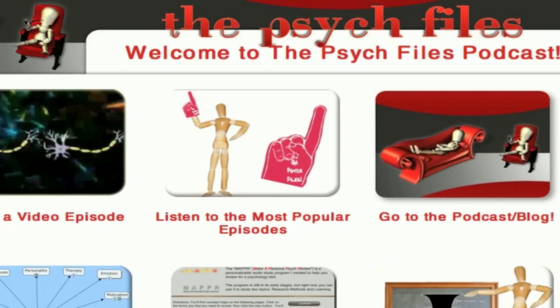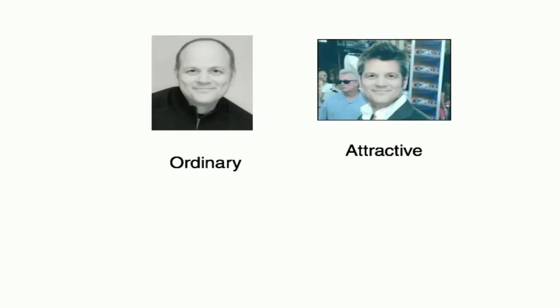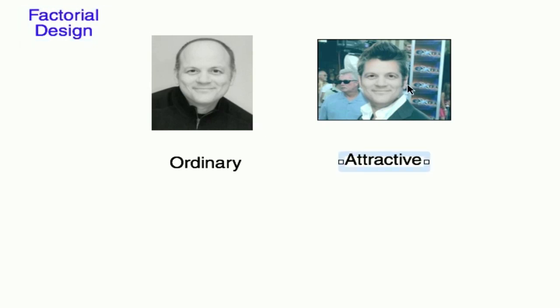This one is on factorial designs, a little bit more complex design, and I will try, as I did in the last one, to give you an interesting topic on which to do this. I used pictures and manipulated them a little bit. I've got a picture of me in the upper left side, and then using the magic of hair mixer, I put a little hair on myself. What I did was I played around with the idea that one of these guys is attractive, and one of them is ordinary.